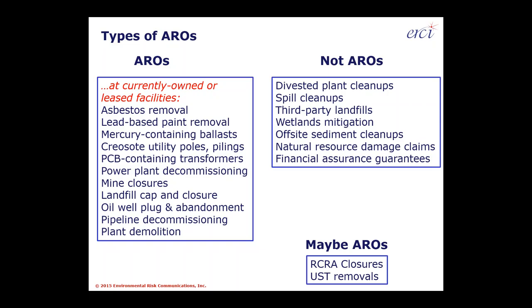The types of AROs out there include asbestos, lead-based paint, mercury-containing ballasts and light fixtures, creosote-infused utility poles and pilings, and PCB-containing transformers — most facilities have a transformer, and those predating the 70s often contain PCBs which can leak into sewer systems and soil. Other long-term closure issues include power plant decommissioning, mine closures, landfill cap and cover, oil well plug and abandonment, pipeline decommissioning, and general plant demo.